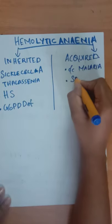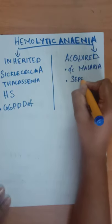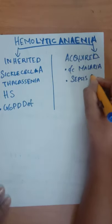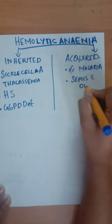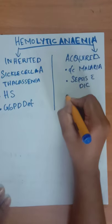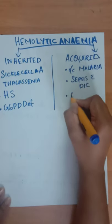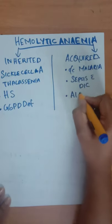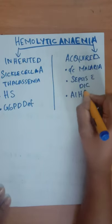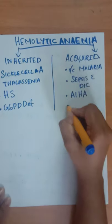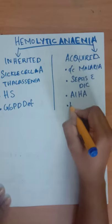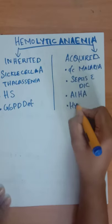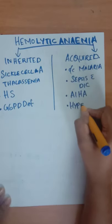Acquired causes include chronic malaria, sepsis with DIC, autoimmune hemolytic anemia, and hypersplenism due to any cause.